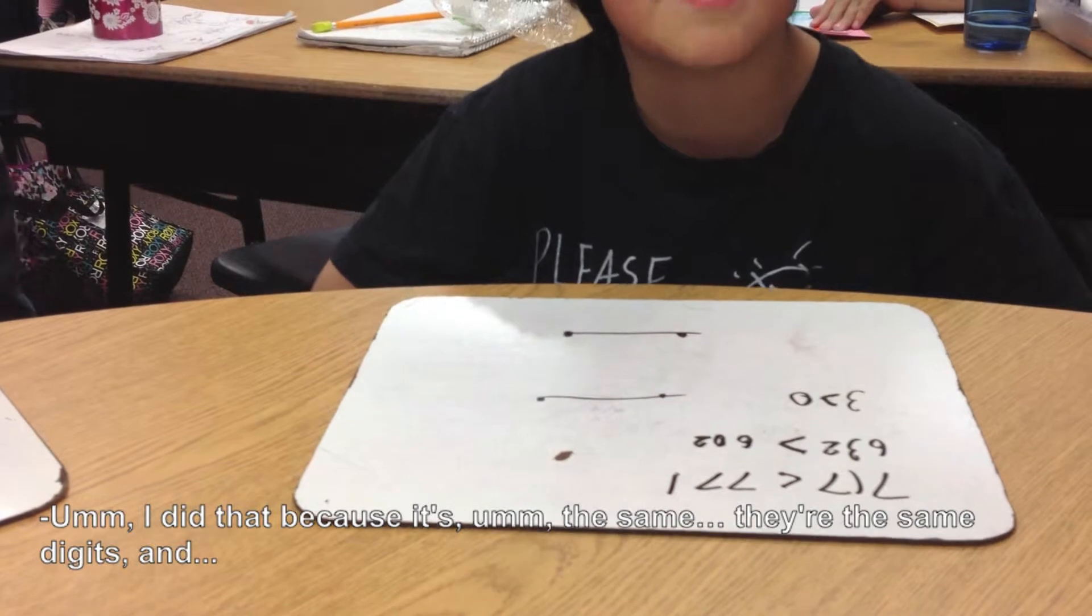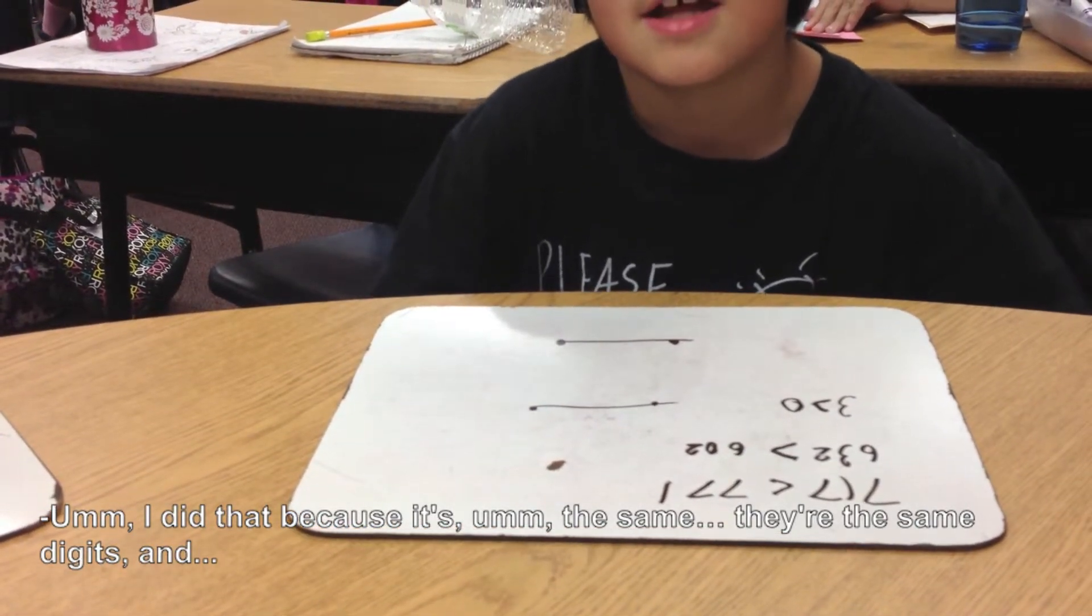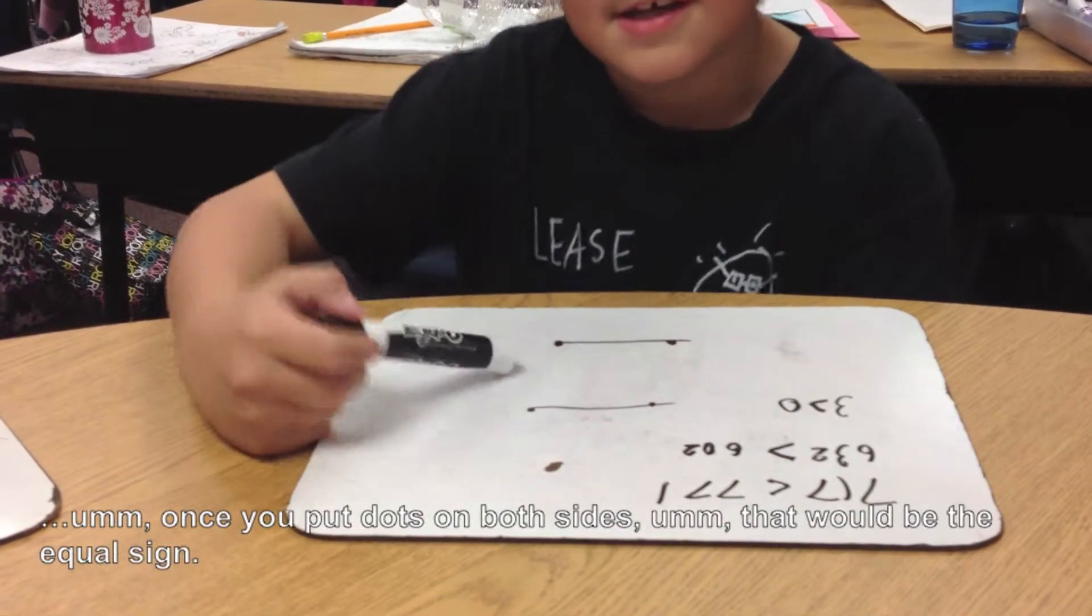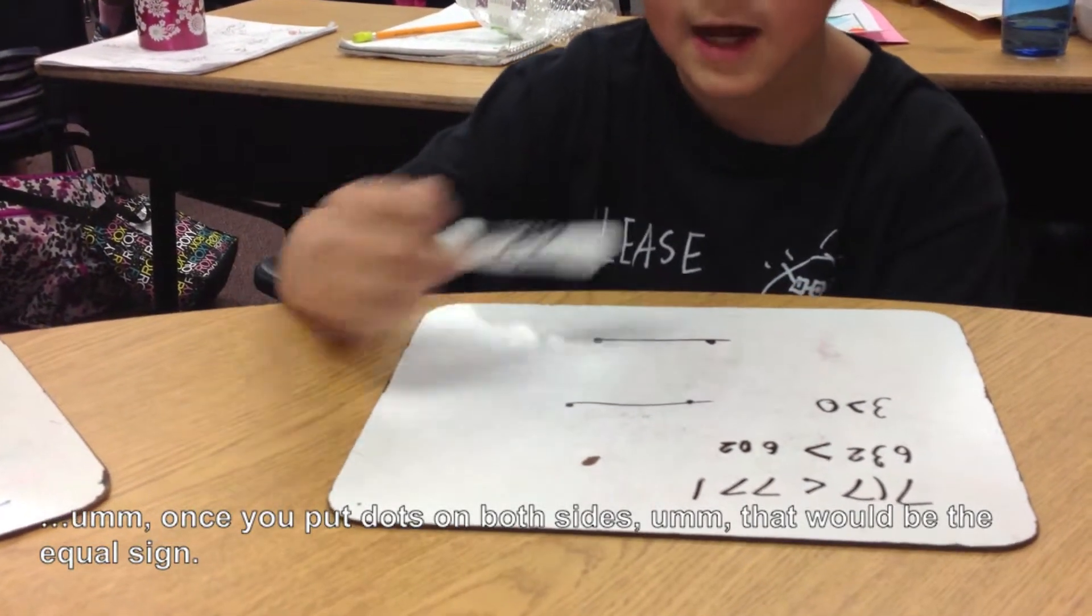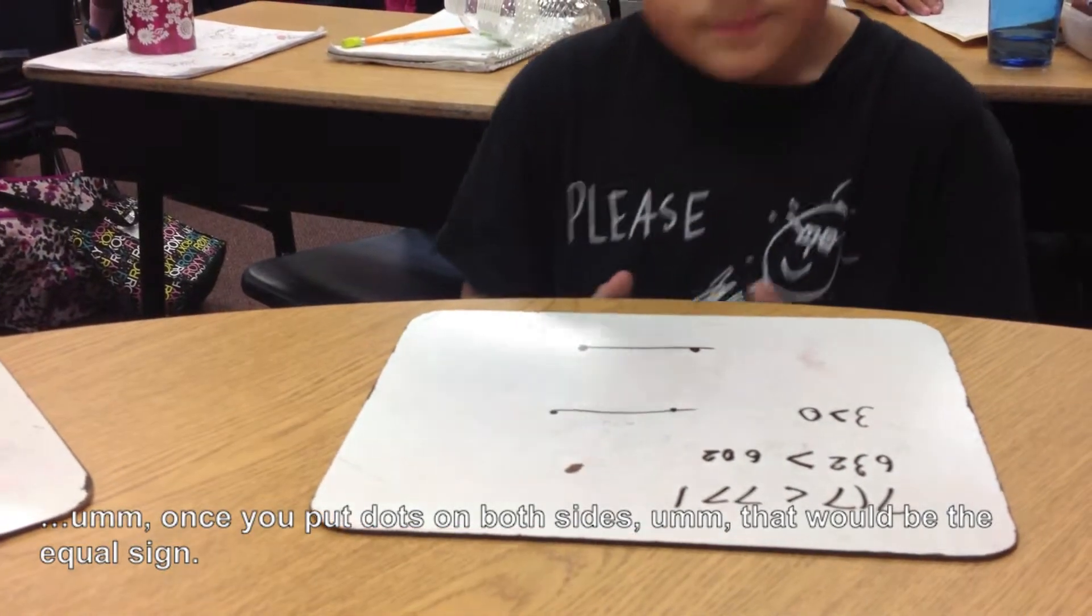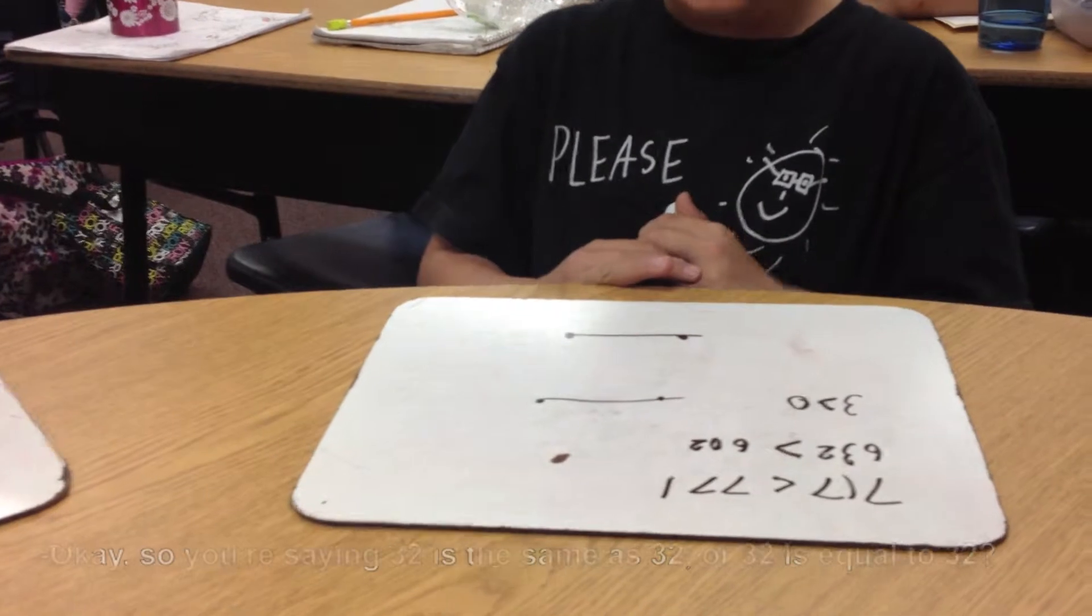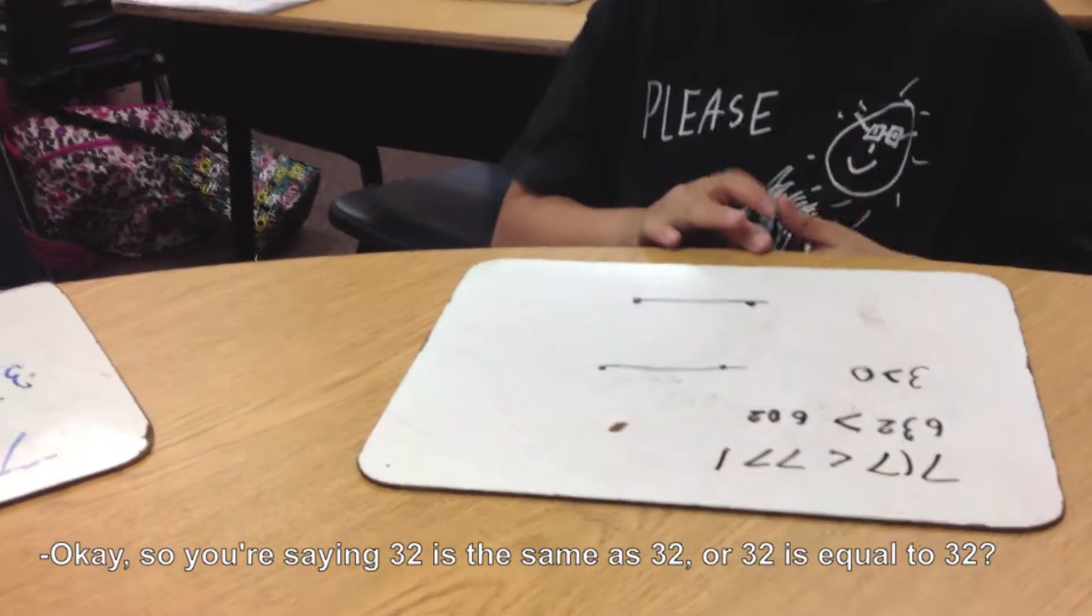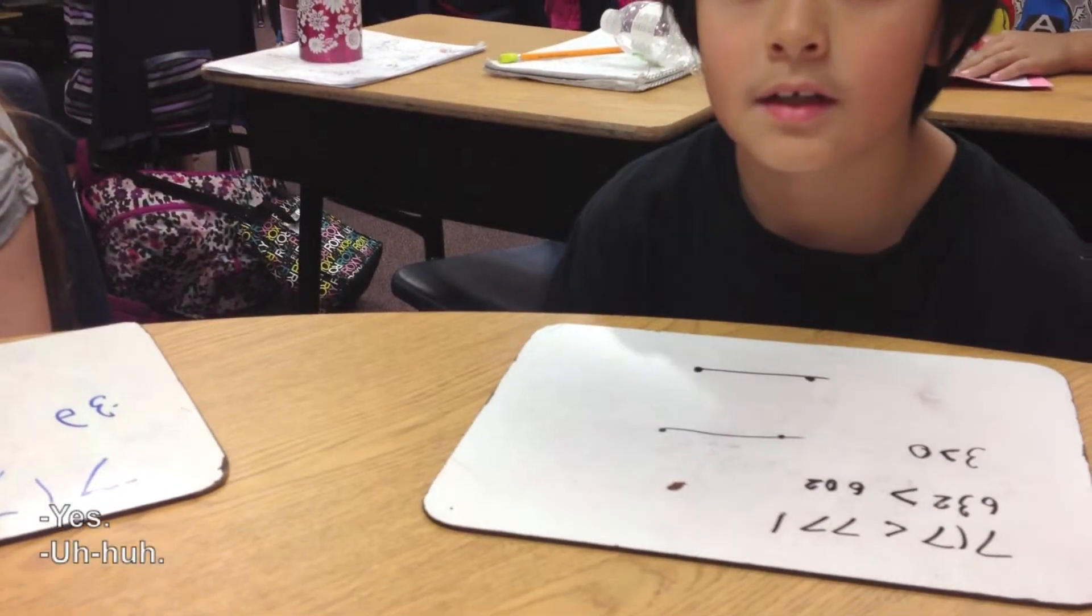I did that because they're the same digits. Once you put dots on both sides, that would be the equal sign. Okay, so you're saying 32 is the same as 32 or 32 is equal to 32? Yes. Uh-huh.